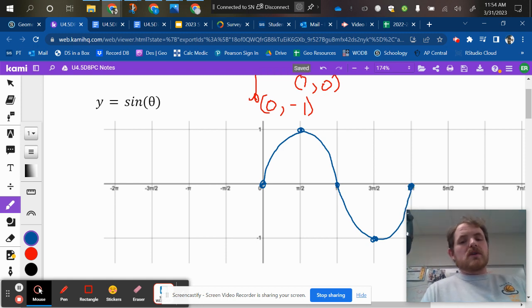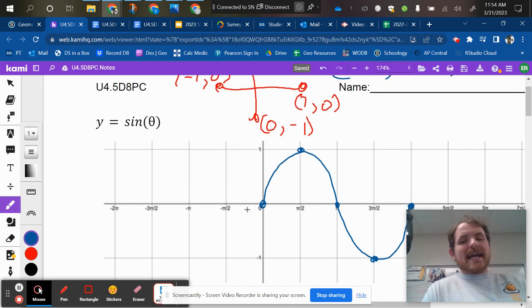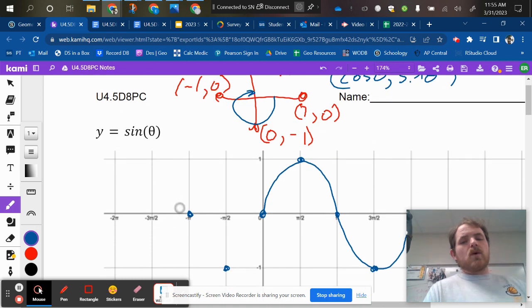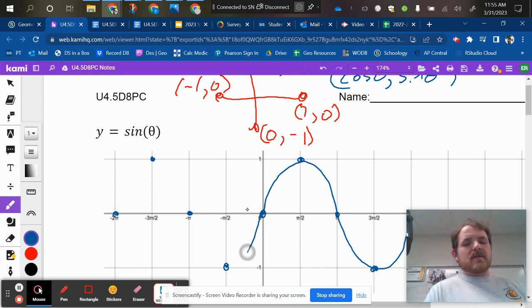So I'm actually going to go left as well. If I went negative pi over 2, okay, that output is negative 1, so I'm going to come down. If I went negative pi, that output is 0, so I'm going to come up to pi. If I went negative 270, the output is 1, so I'm going to go up to 1, and then negative 360, it would go to 0, so it should look something like this.